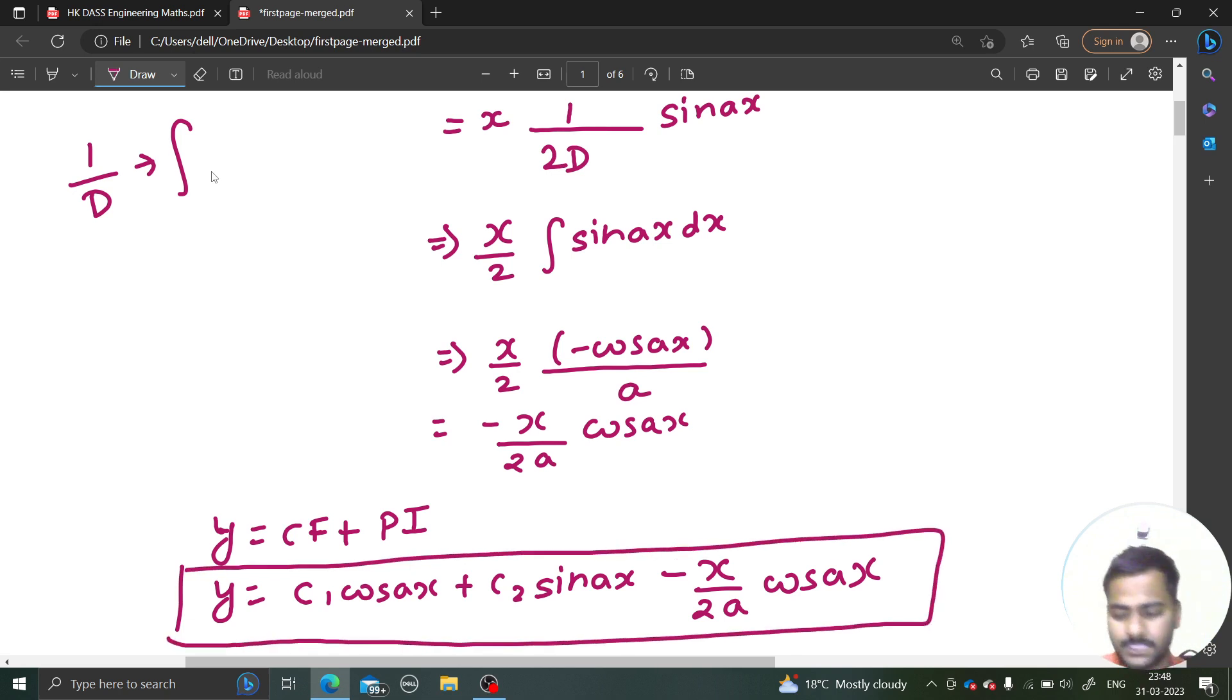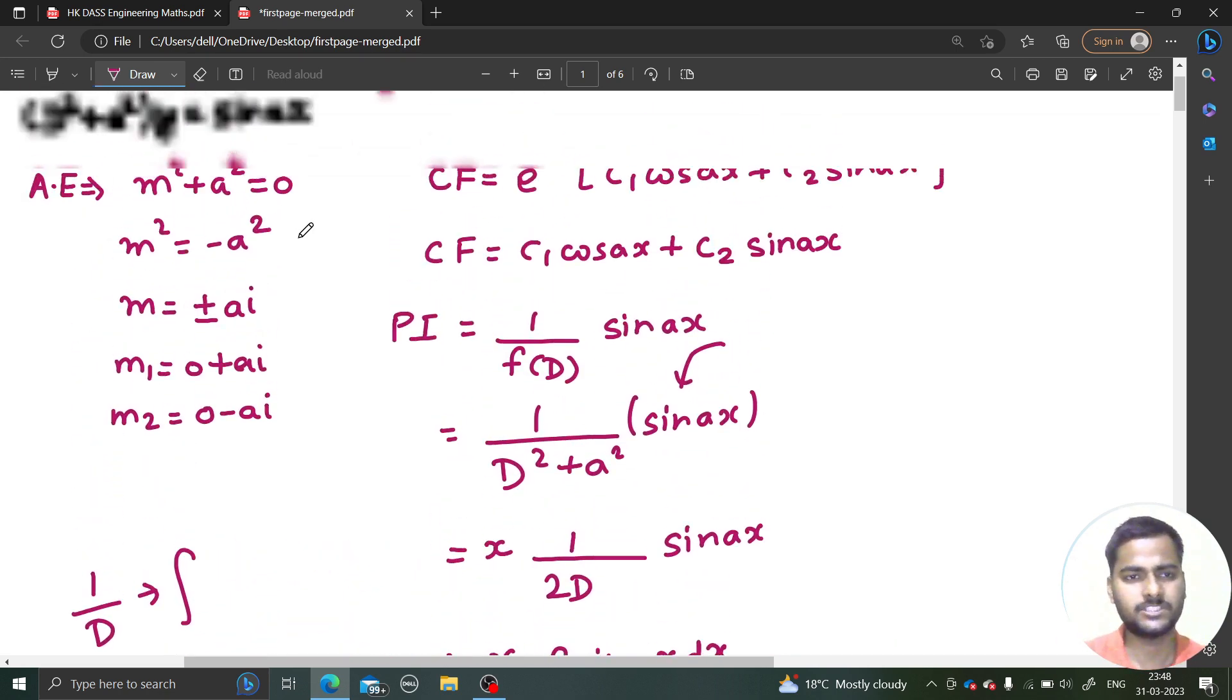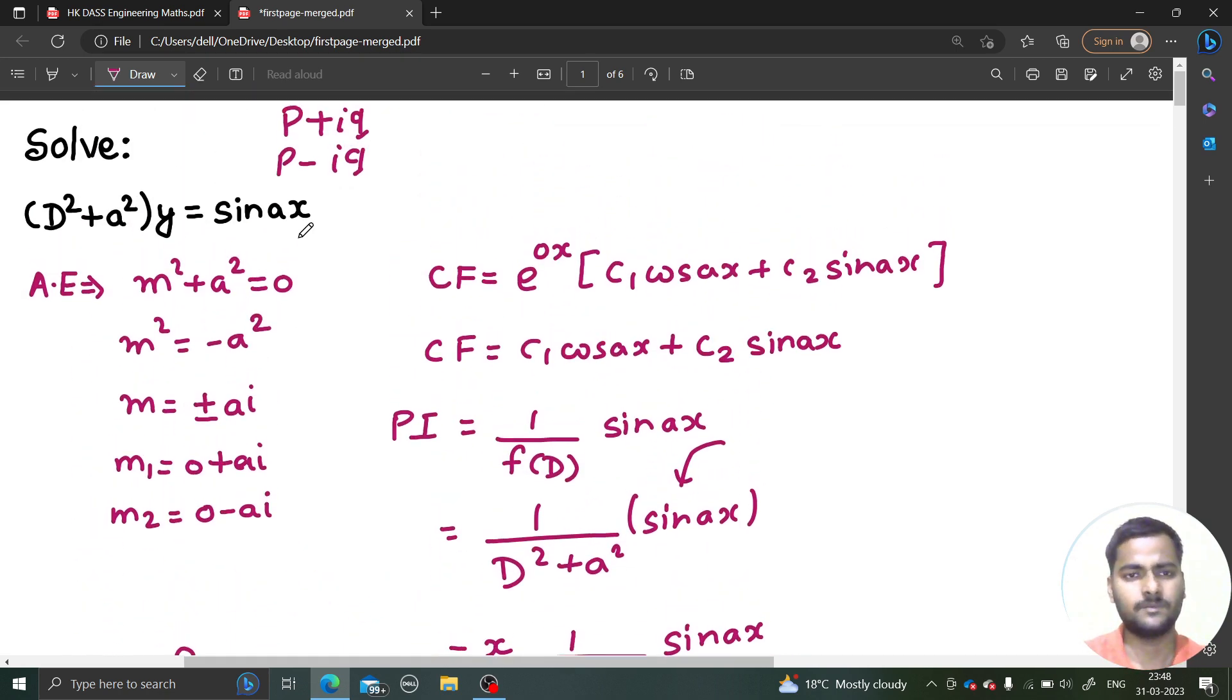So I hope you understood this. We will see you with some more problems. You can visit my playlist which is ordinary differential equation where I solved similar problems like this. Otherwise, this was simple. You first find the auxiliary equation, then find the complementary function, and then follow it by finding the particular integral. Finally, y equals to CF plus PI. So I hope you understood this. Thanks again.